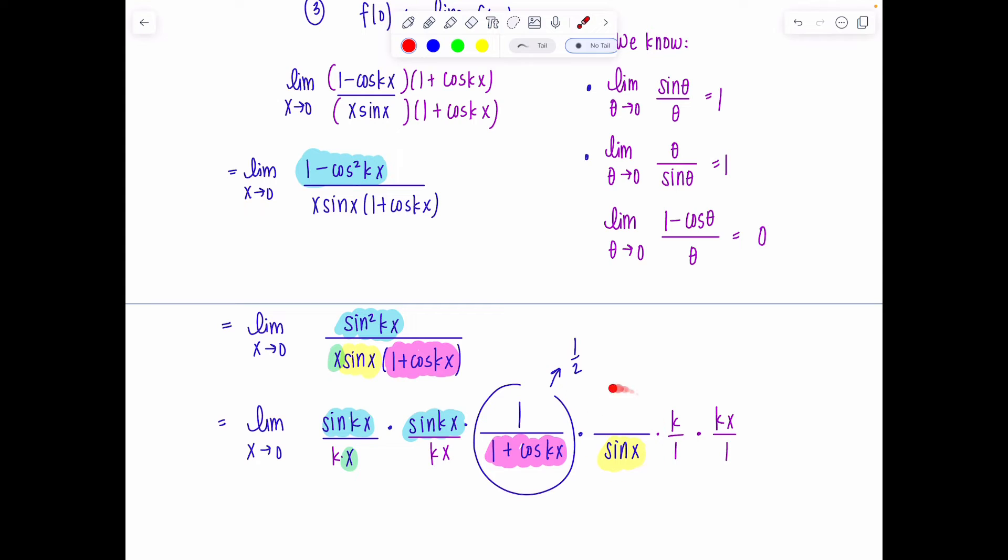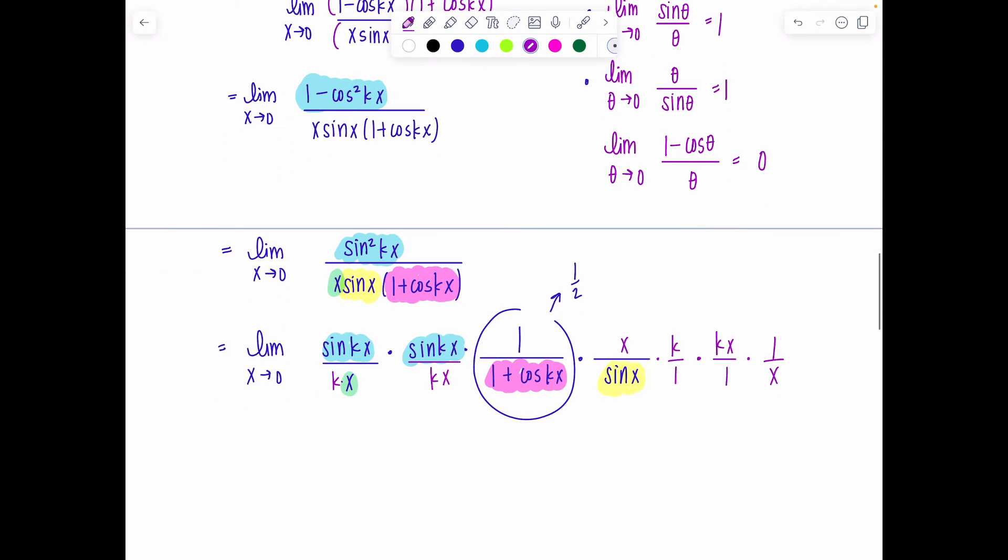Last term to focus our attention on. Again, I want to use this limit rule here. What am I missing up top? An x. So go add it in there. I added an x in the numerator, so I need 1/x in the denominator. We're ready. We can start taking the limit of what I have here. And also notice this x cancels with the one I just added.